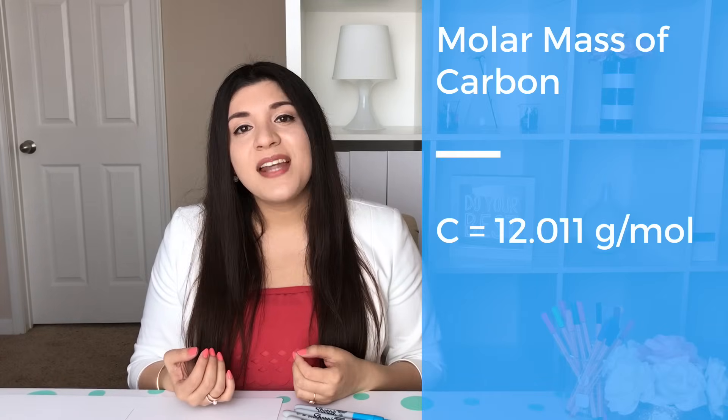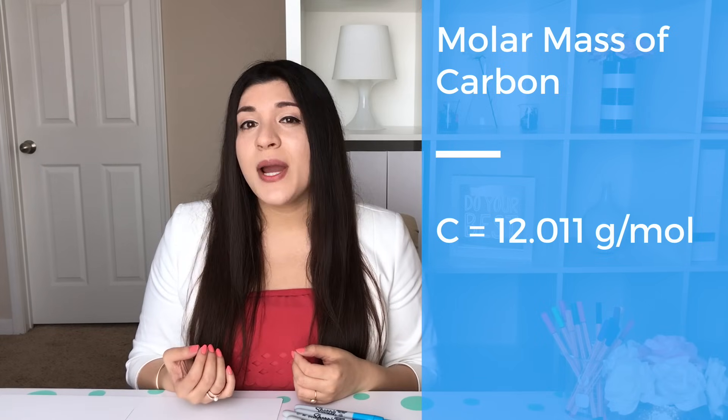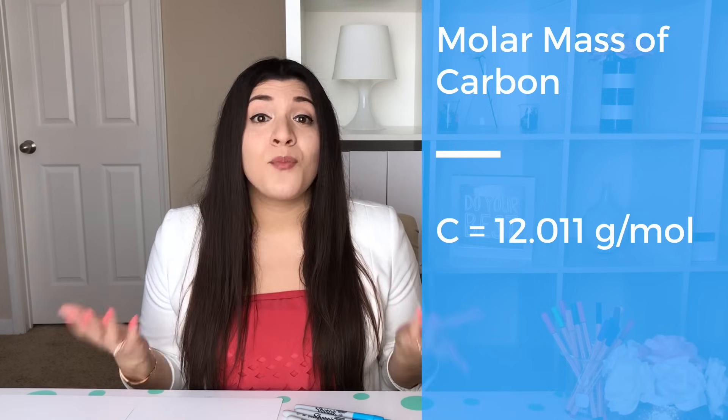So let's say if we just want the individual element of, let's say, carbon. If we only want that individual element's molar mass, you refer to the periodic table. And you'll see that carbon has a 12.011 mass. We'll add the grams per mole, and that's what makes it molar mass.